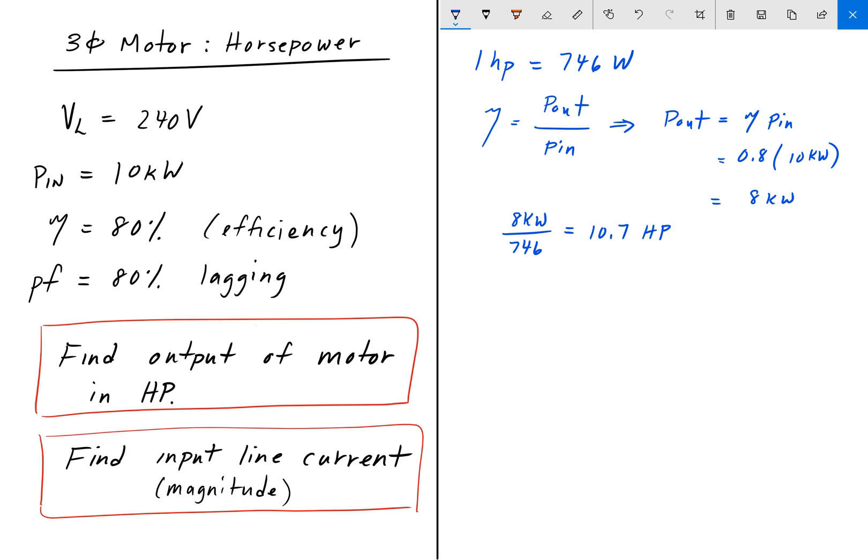And to find the input line current, let's start off with the definition of power factor. So power factor, as you recall from last videos, is equal to the real power or the true power divided by the apparent power. And what is apparent power? Apparent power is what appears to be in the system. So that's going to be the square root of 3 times V line times I line. And this is P here.